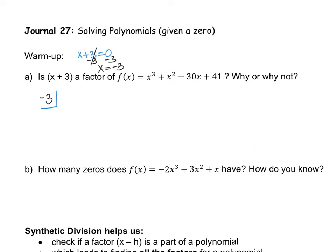The highest degree here is x to the third, so I'll do my labeling: x to the third, x squared, then keep decreasing the power until you reach the constant. Now put the numbers in front of the x's: a 1 in front of x to the third, so 1 underneath, then another 1 for x squared, a negative 30 for x to the first power, and 41 for the constant.